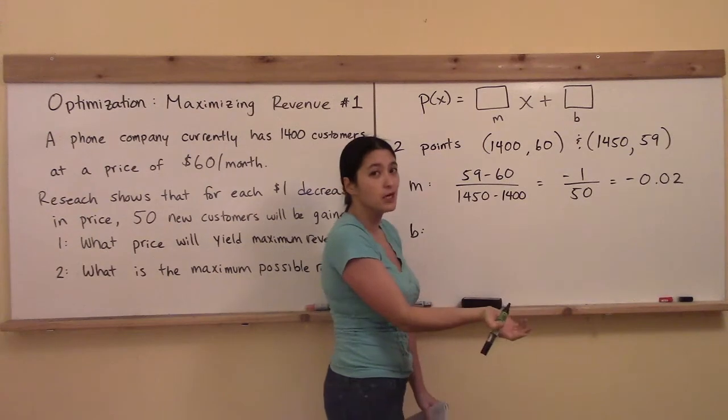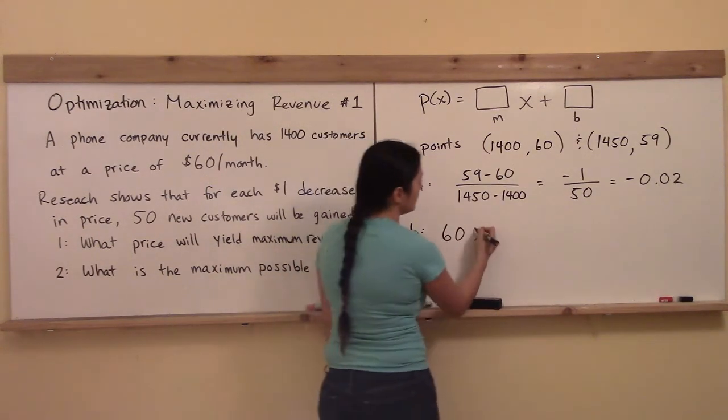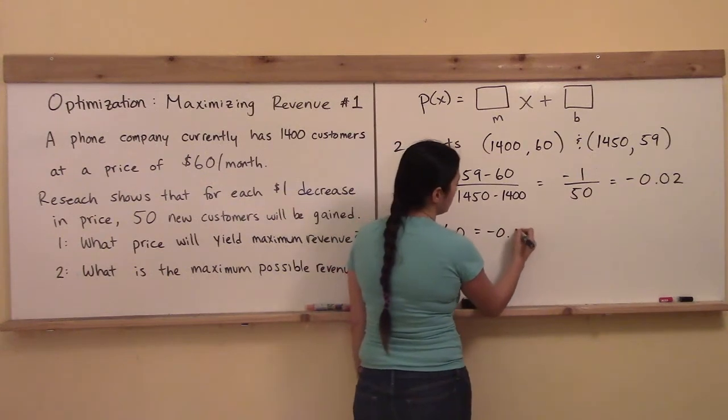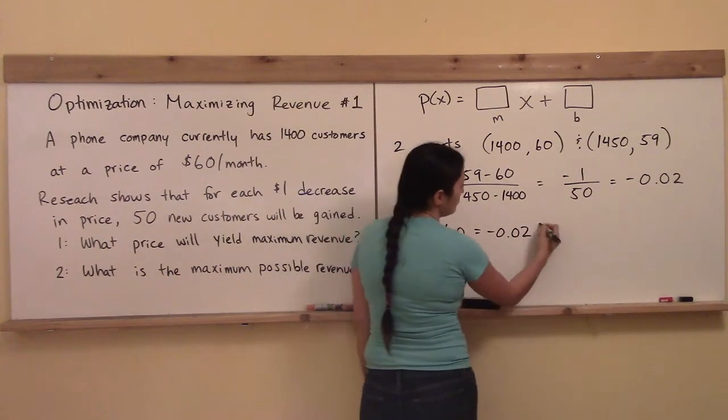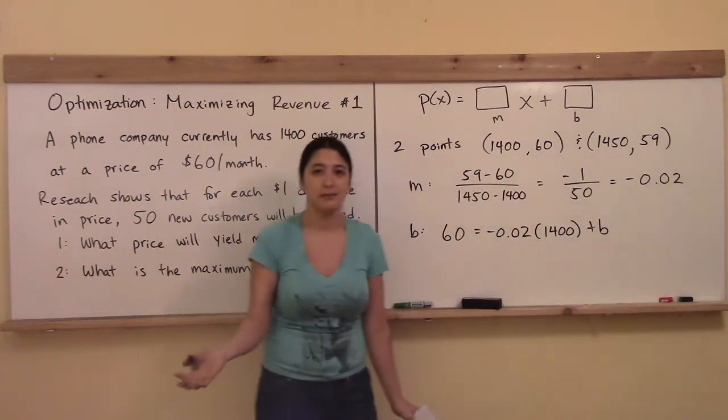You have to find the m first because then when you find the b, it's simply a matter of taking one of these points and it can be done on either one. And you put the y where the y is supposed to be, and then you put the m in where the m now goes, and you put the x where the x is supposed to be.